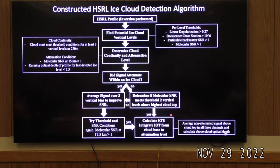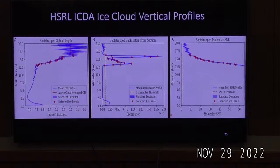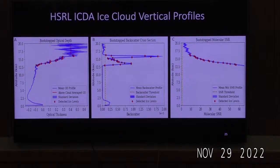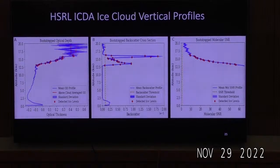After isolating these potential cloud segments, I check whether the signal attenuates within the cloud. If it doesn't, I make sure the molecular SNR meets the threshold two vertical levels above the cloud top. If that's still valid, I calculate the ice cloud optical thickness by taking the running optical thickness at the first detected ice cloud level at the base. I average the optical thickness signal above the cloud, run through the forward model equations to calculate the optical thickness of the layer above the cloud, and take the difference between that layer and the cloud base. If the signal did attenuate within the cloud, I try to vertically average to improve SNR and try these thresholds again.